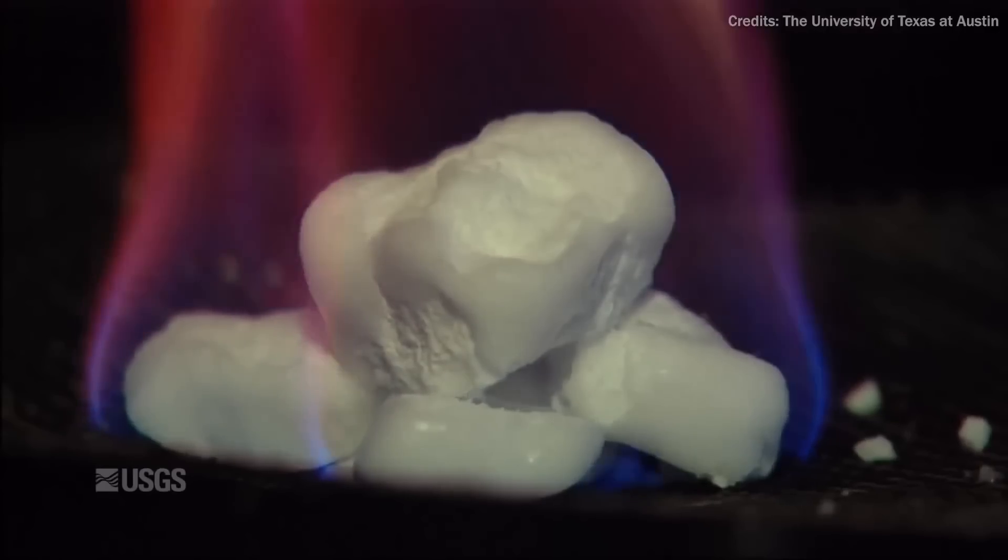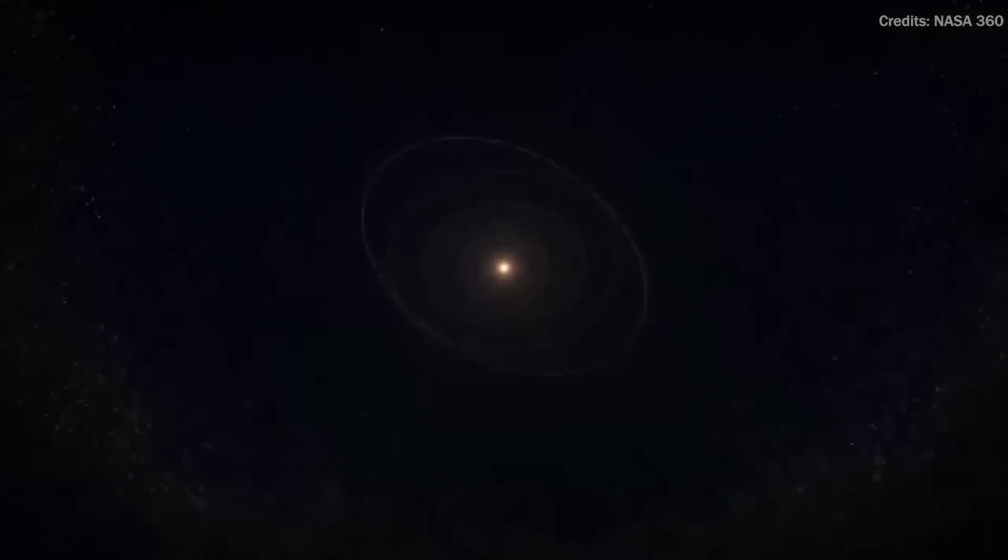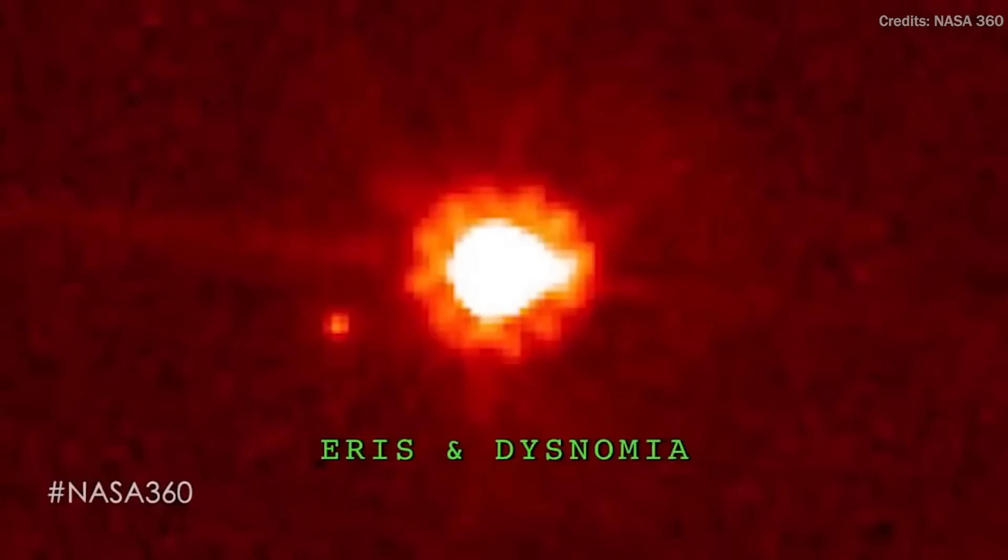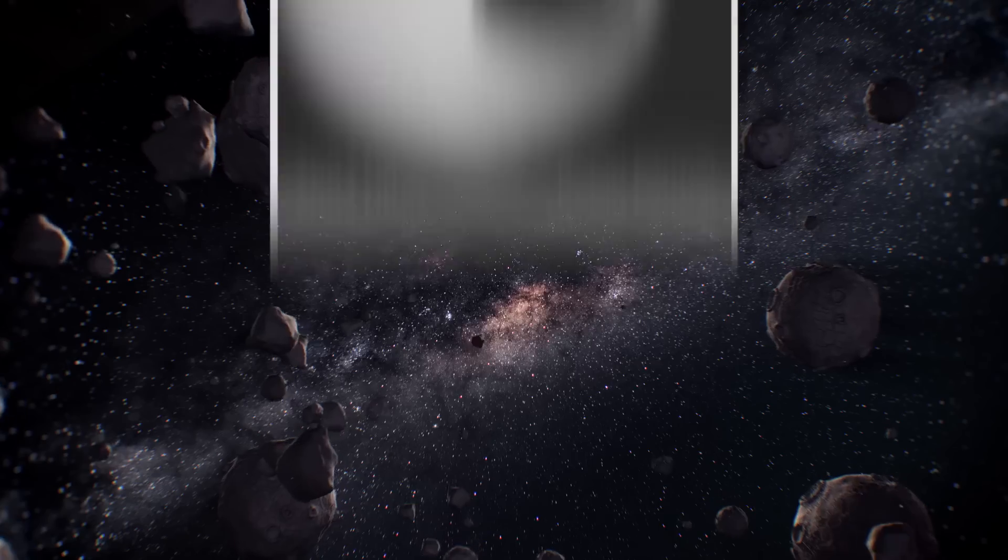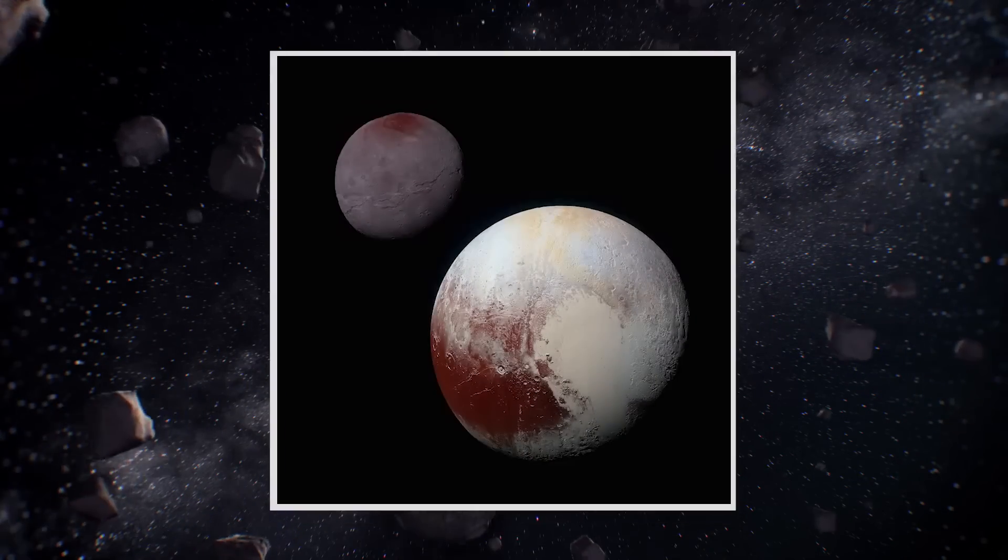Trujillo lamented if 2003 UB313 ever got close to the sun, all of the methane ice would have melted. According to Brown, no other object in the Kuiper belt has a surface like that. The new object, on the other hand, appears nearly gray in color, whereas Pluto is somewhat red. The team has no explanation for this disparity as of yet.